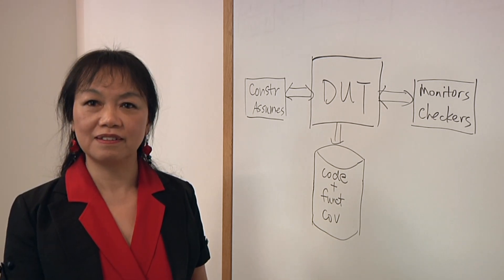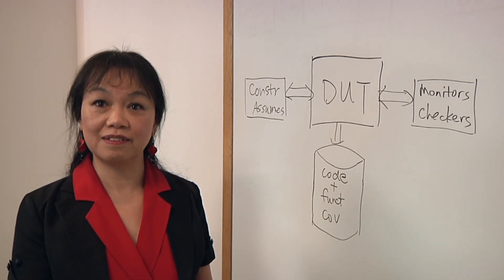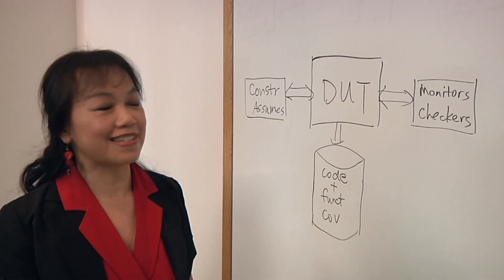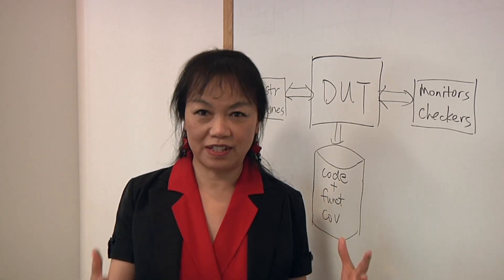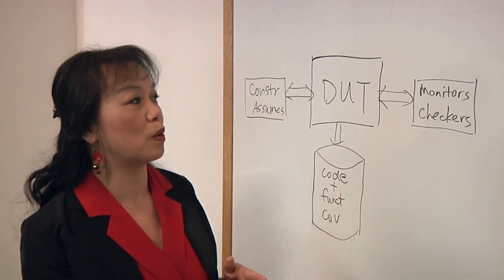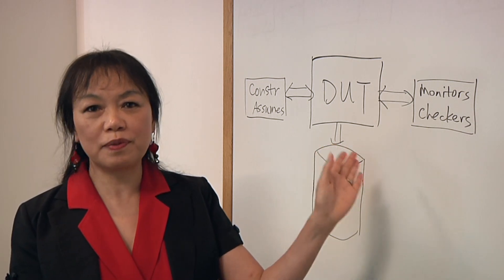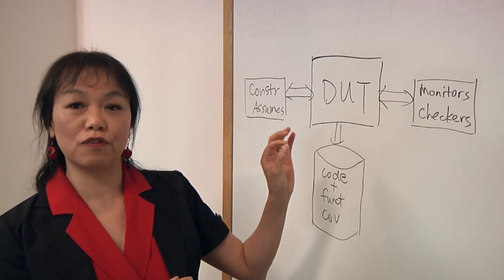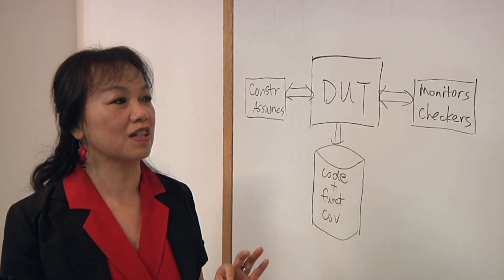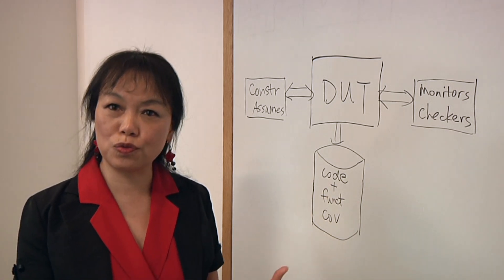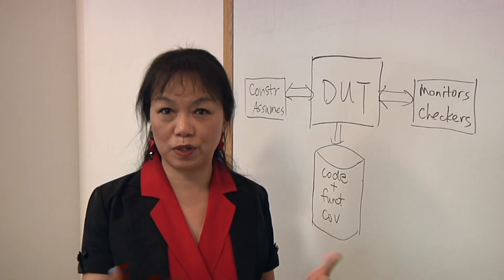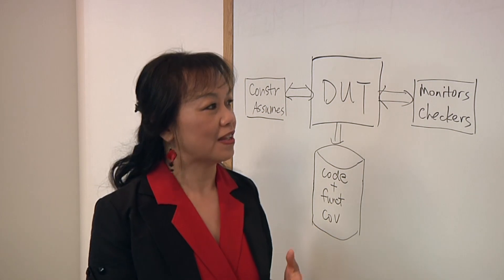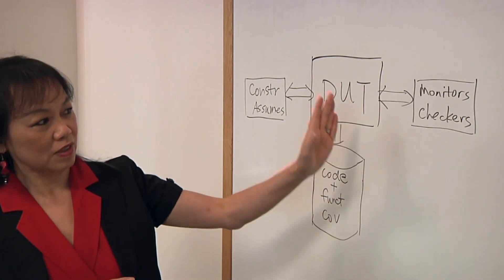So one of the problems has always been, do you have enough assertions? That's true. That's the first thing you start with - writing assertions. Because formal needs assertions to be able to verify your design using the formal algorithms to see whether the property holds true given a set of input constraints. So that's what we're looking at, some drawings here.